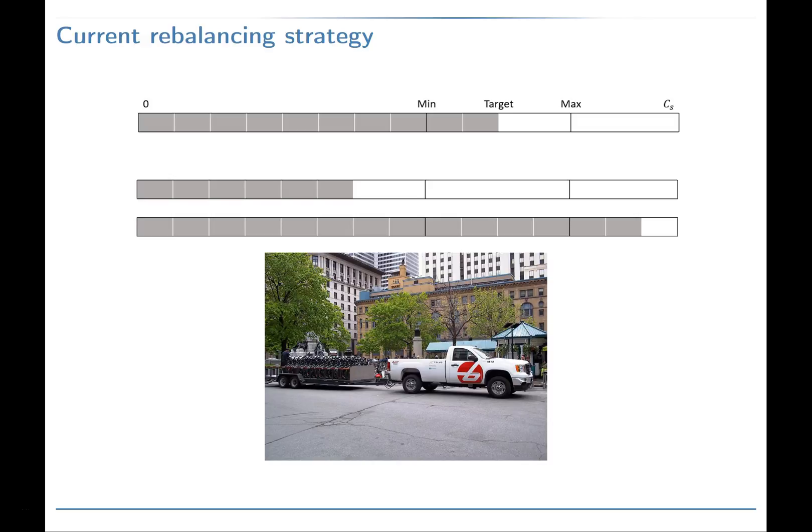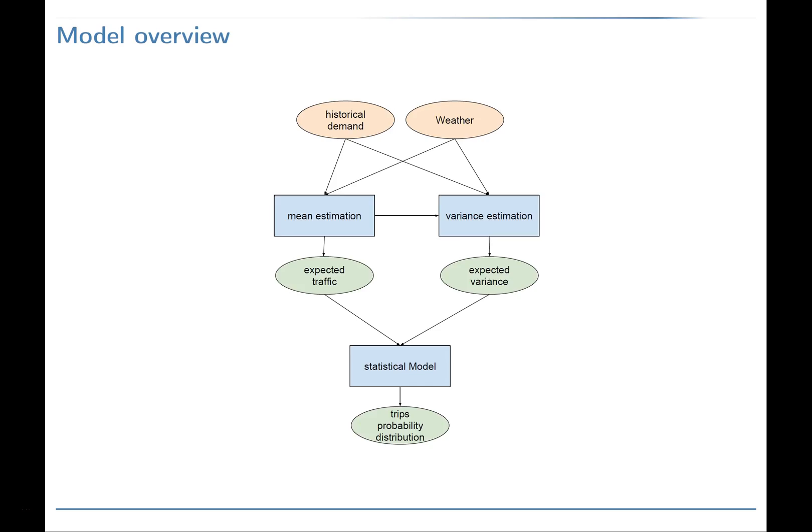We propose a quantitative method for defining inventory intervals in the stations using the learned traffic model. These results are expected to drive the operators' rebalancing operations in such a way that the number of lost rentals and returns is minimized. This figure shows how our model works.